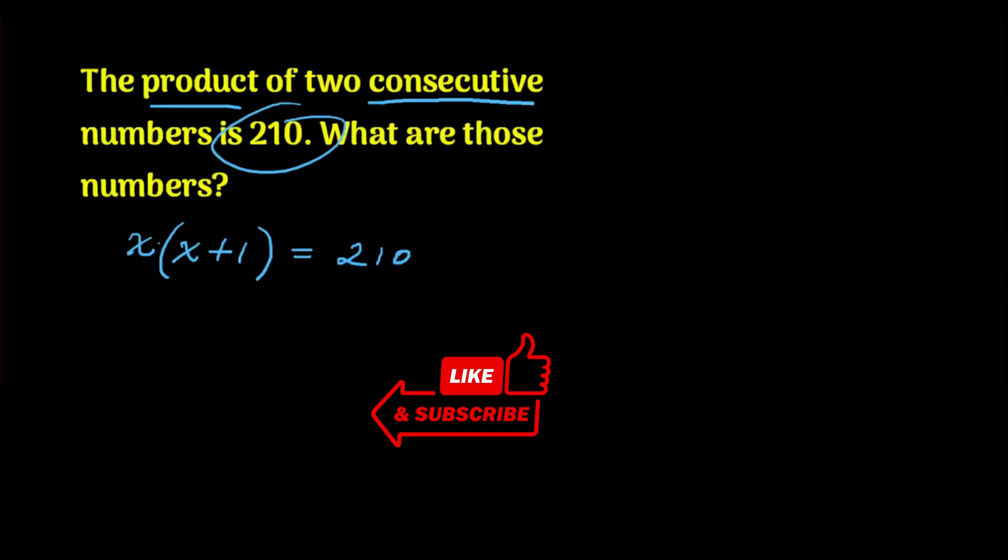Now, let's go ahead and do some algebra. Whenever you see x bracket something like this, you can do distributive property. So let's multiply x into that bracket. And when we do that, we get x times x, which is x squared. We get x times 1, which is 1x, or x, and that equals to 210 in this case.